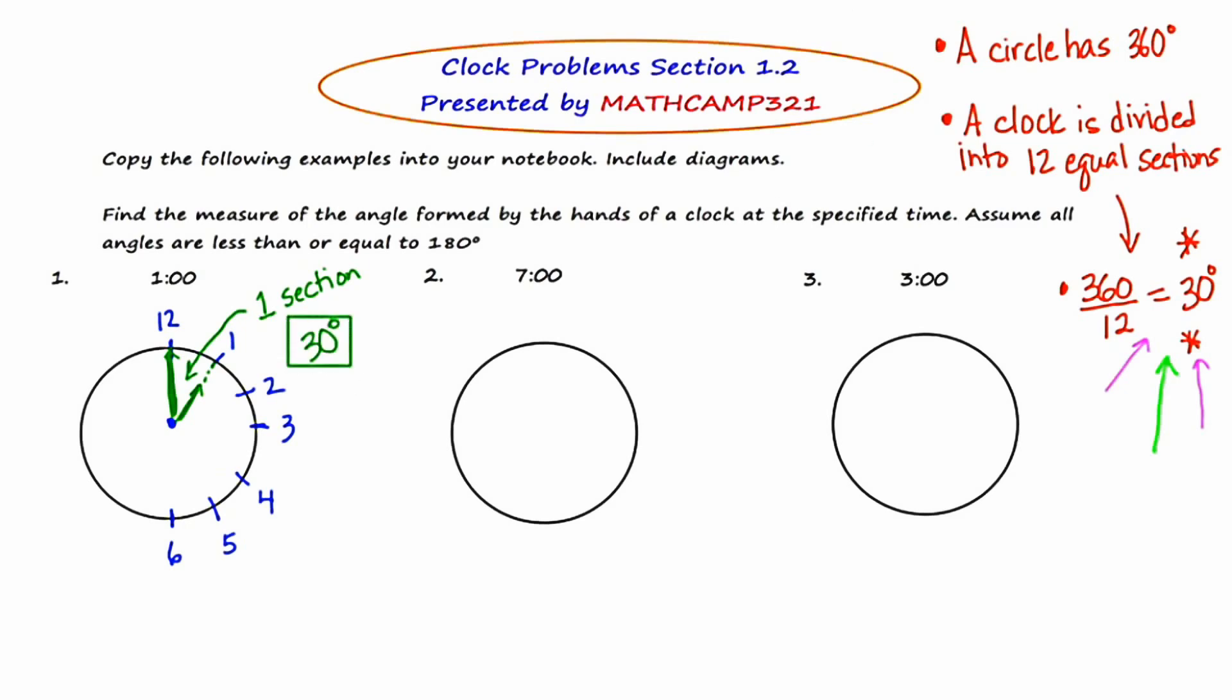Let's go to number two. Find the measure of the angle formed by the hands of the clock at 7 o'clock. So let's start by drawing in the features of the clock. At 7 o'clock, the little hand is facing the 7. The big hand is facing the 12.